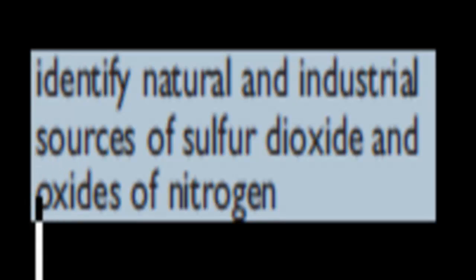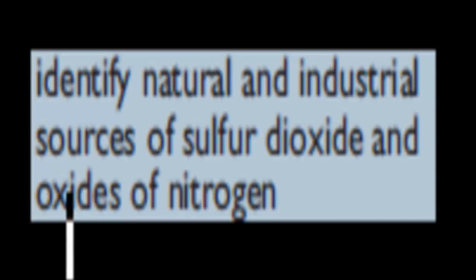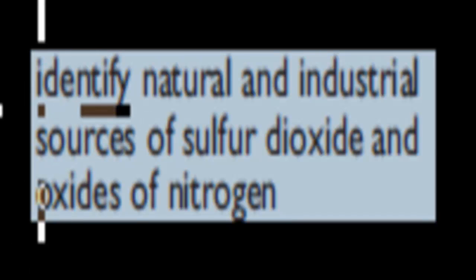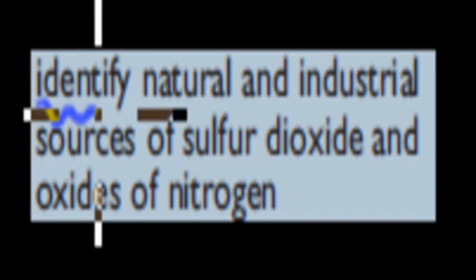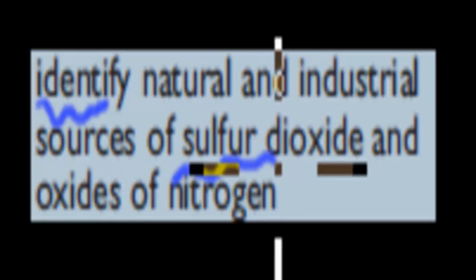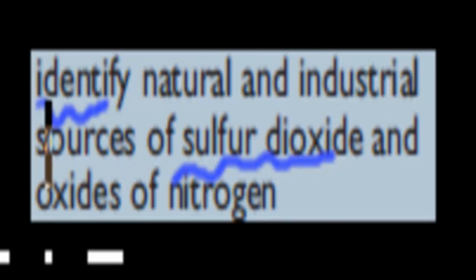Welcome back. In the last video, we talked about what kind of oxides can be produced by both non-metals and metals, and looked at the periodic table in general in terms of what kind of oxides they produce. What we're going to do in this video is come to the next stop point, which is quite related to the last one: identify natural and industrial sources of sulfur dioxide and oxides of nitrogen.